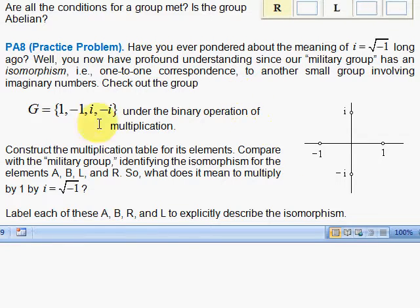So what I'm going to ask you to do here as a little exercise to work out, convince yourself that there is an isomorphism here where, for example, 1 is like attention. 1 times anything doesn't change it. Minus 1 is like bout face. You multiply 1 by minus 1, you come over here. And therefore, i must be left face since i times i is an about face. And minus i must be right face.